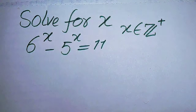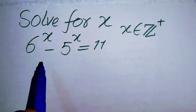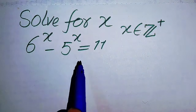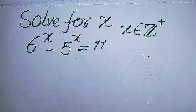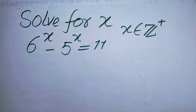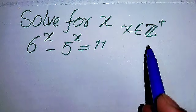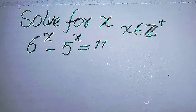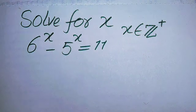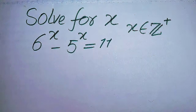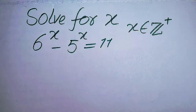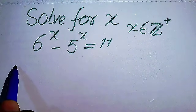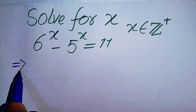Hello everyone. How to solve this problem: find the values of x if 6 to the power of x minus 5 to the power of x equals 11. We solve this problem for the positive integer values of x. I hope you like this method, but if you have any other method in mind, please don't hesitate to write it in the comment section.